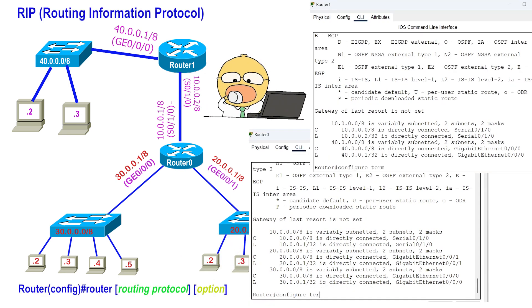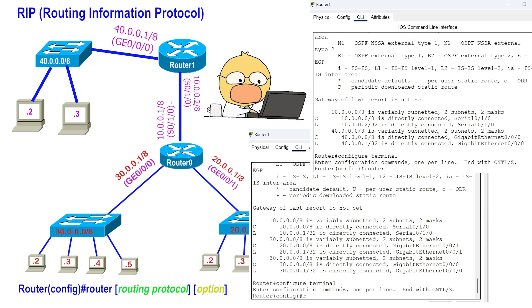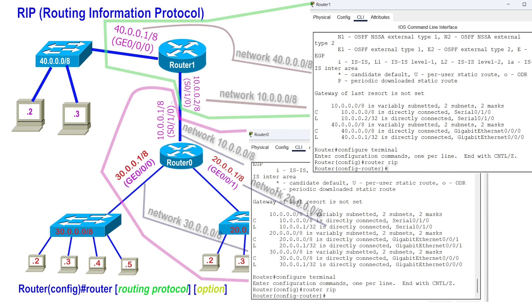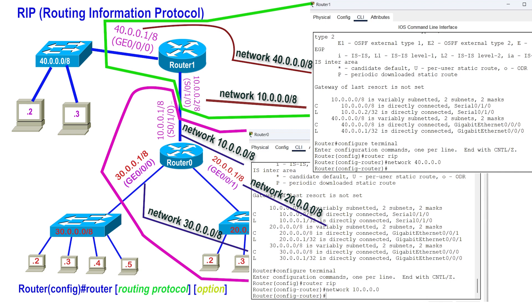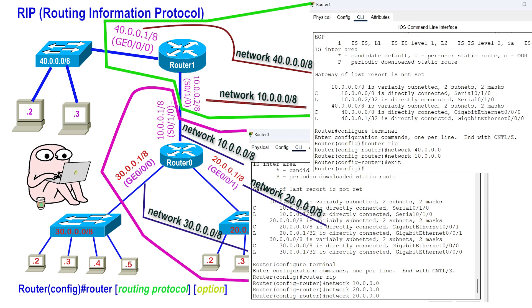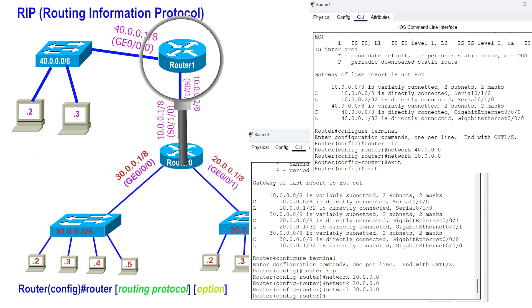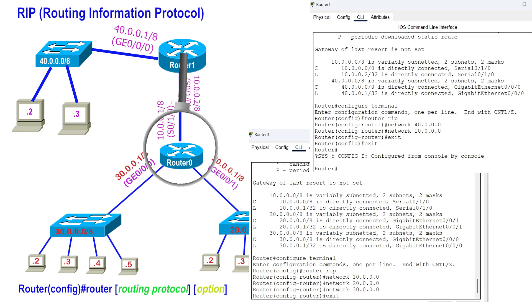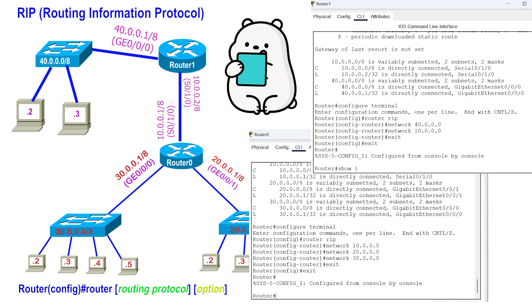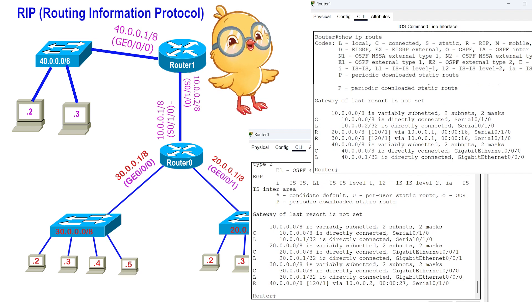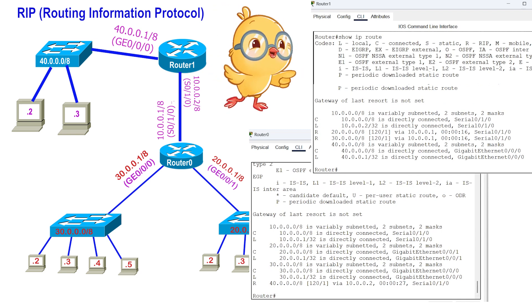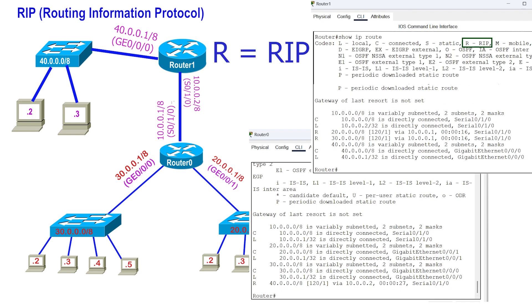Now let us configure the RIP routing protocol. The router command in global configuration mode enables the routing protocol. The routing protocol requires a list of locally configured IP subnets — the network command adds a given subnet to this list. Specify the network address of each directly connected subnet, and repeat these steps on all routers. Once enabled on all routers, it automatically discovers all network routes, selects the best route using an algorithm, and adds it to the routing table. The routing table assigns the letter R to the RIP routing protocol.